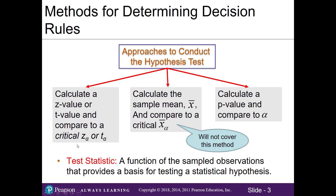A test statistic is a function of the sampled observations that provides a basis for testing a statistical hypothesis. In other words, we're going to use the sample data to calculate a test statistic and use it to make a decision.